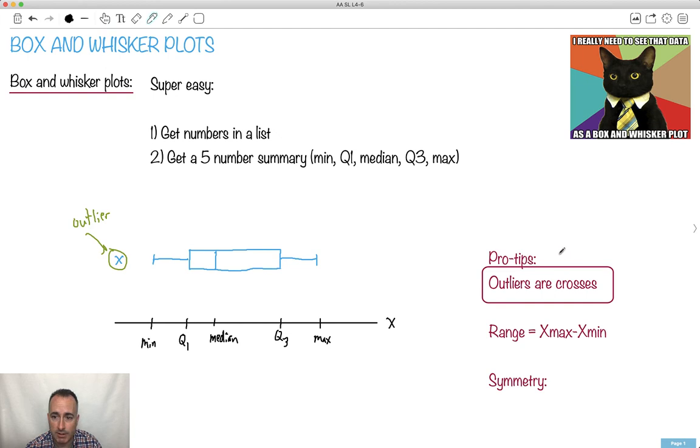Remember what outliers are? Outliers are greater than 1.5 times IQR from Q1 or Q3. So I have another video showing you that. That's what those are. So those are crosses.